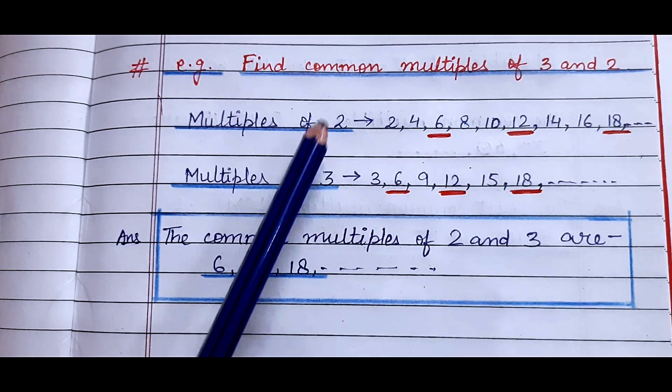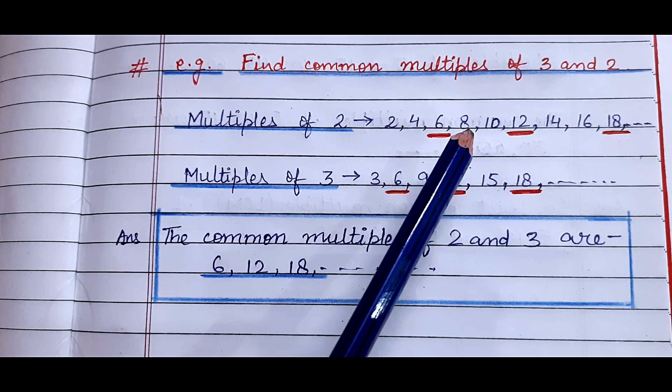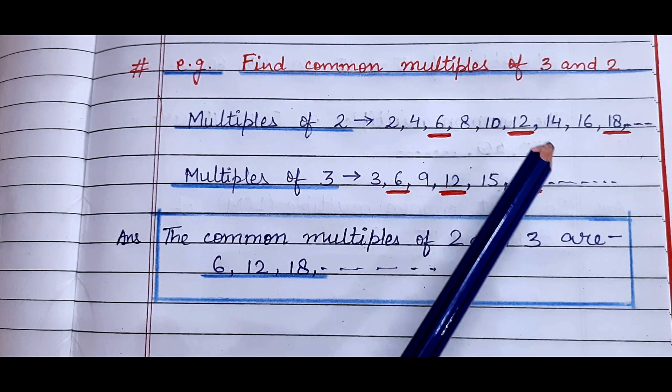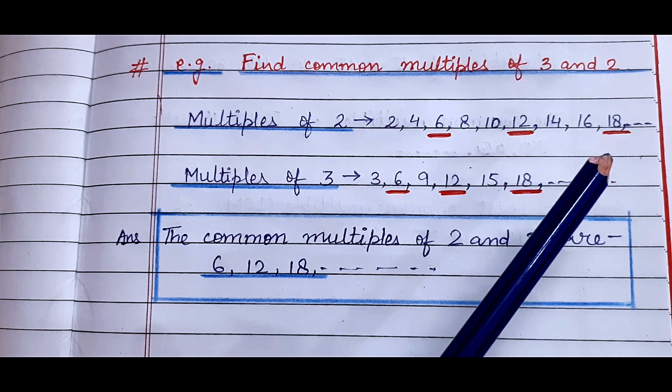So the multiples of 2 are 2, 4, 6, 8, 10, 12, 14, 16, 18 and so on.